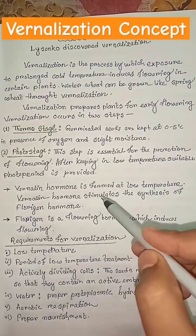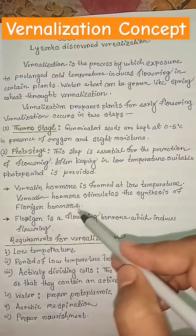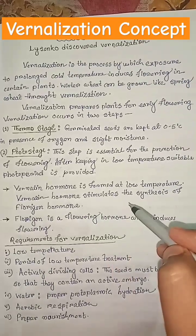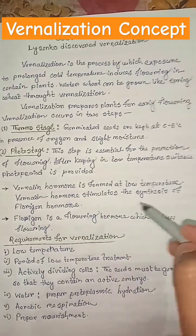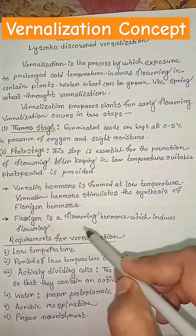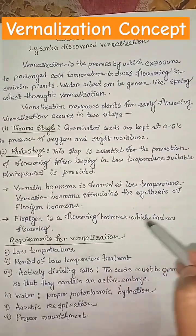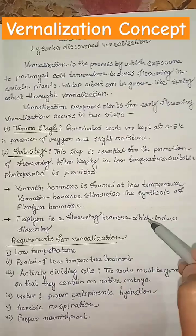Vernaline hormone is formed at low temperature. Vernaline hormone stimulates the synthesis of florigen hormone. Florigen is a flowering hormone which induces flowering.